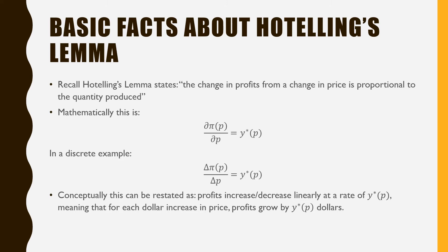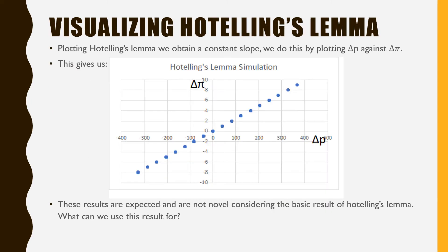Conceptually, this could be restated as profits increase or decrease linearly at a rate of y-star, which is a slope parameter, meaning that for each dollar increase in price, profits grow by y-star dollars. In terms of visualizing Hotelling's Lemma, plotting delta P on delta pi, we get a straight line passing through the origin.